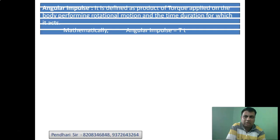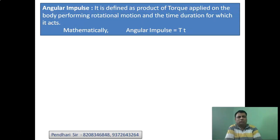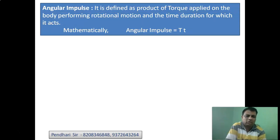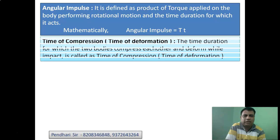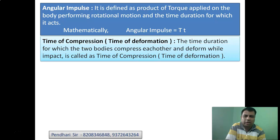If you have angular impulse — just like linear force gives linear impulse — the torque applied over time gives angular impulse. It is defined as the product of torque applied on a body performing rotational motion and the time duration for which it acts. Mathematically, angular impulse = torque × time.